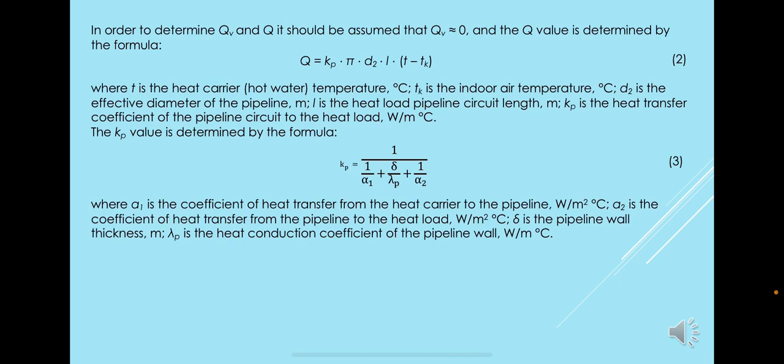D2 is the effective diameter of the pipeline, L is the heat loaded pipeline circuit length in meters, kp is the heat transfer coefficient of the pipeline circuit to the heat load. The kp value is determined by the formula here, where λ1 is the coefficient of heat transfer from the heat carrier to the pipeline, λ2 is the coefficient of heat transfer from the pipeline to the heat load, δ is the pipeline wall thickness in meters, and λm is the heat conduction coefficient of the pipeline wall in watts per meter degrees Celsius.